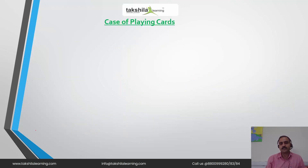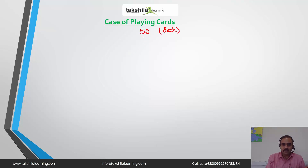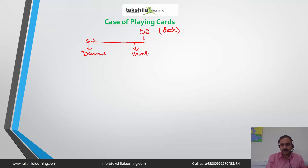Now let us discuss the case of playing cards. In a deck of playing cards we have 52 cards. These cards have four suits: the first one is diamond, the second one is heart, the third one is club, and the last one is spade.